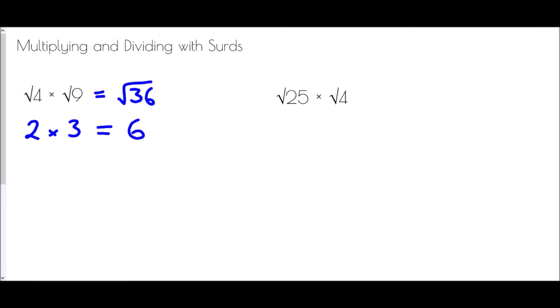Let's do the same with 25 and 4. Well the square root of 25 is 5, and the square root of 4 is 2 — that gives me 10. What is 10 the square root of? Well 10 is the square root of 100. Is there a way I could have gotten straight to those answers? Let's look at the numbers: 4 times 9 is 36, and 25 times 4 is 100.